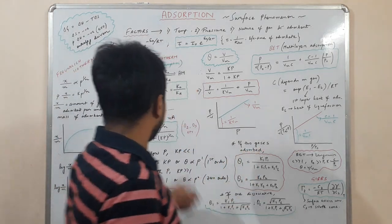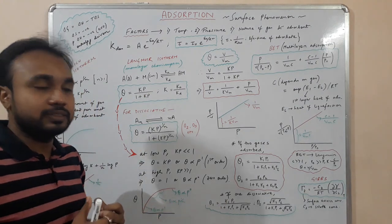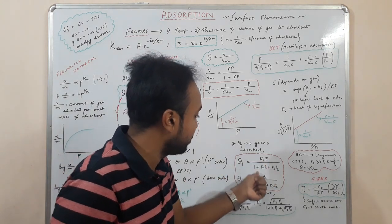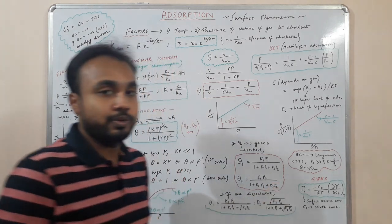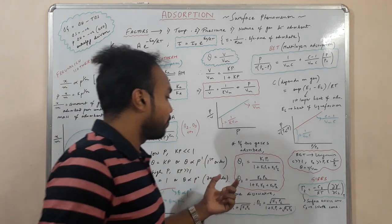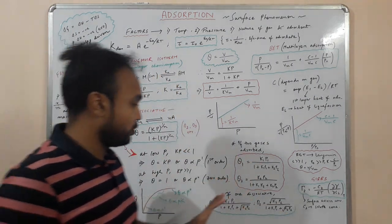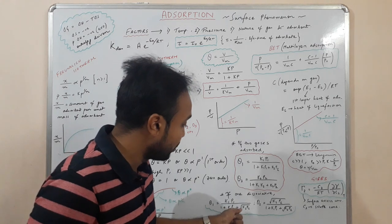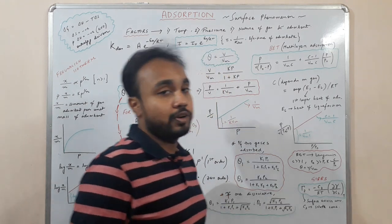If two gases are adsorbed simultaneously, for gas 1: θ₁ = k₁P₁ / (1 + k₁P₁ + k₂P₂), and for gas 2: θ₂ = k₂P₂ / (1 + k₁P₁ + k₂P₂). If gas 2 undergoes dissociation while gas 1 does not, then: θ₁ = k₁P₁ / (1 + k₁P₁ + √(k₂P₂)), and θ₂ = √(k₂P₂) / (1 + k₁P₁ + √(k₂P₂)).